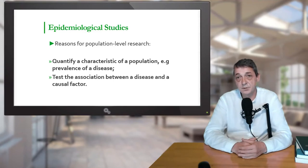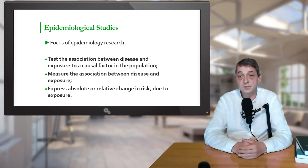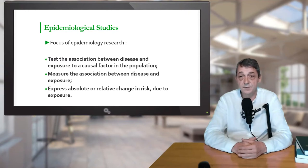Both types are observational because the researcher observes events without intervention. The main focus of epidemiology research is to test the association between disease and exposure to a suspected causal factor in the population, and to measure the association and express the absolute or relative change in risk due to the exposure. In general, risk is defined as a possibility of hazard, bad consequences, loss and so on. Whatever the type of observational research, the population is usually too large to allow observation of all animals. Moreover, estimation of association can often be obtained to an acceptable degree of precision by selecting a number of animals smaller than the population size.